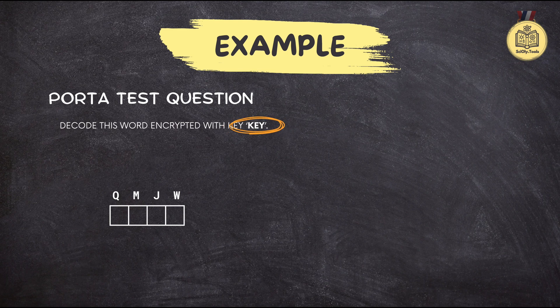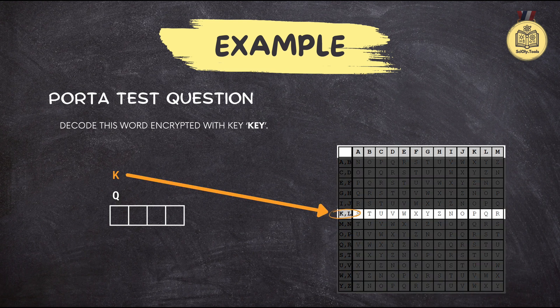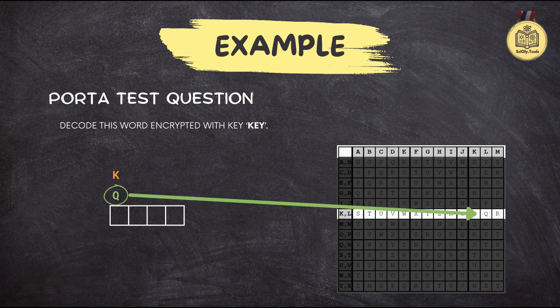First, we align them, repeating the keyword as needed to match the length. To decode the first letter Q, we need the keyword letter K. We locate the K row in our Porta table — that row becomes our decoder ring for all the letters paired with K. Within that row, we find our ciphertext letter Q, and the column header above it reveals the letter L. That's our first decoded letter.